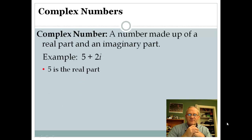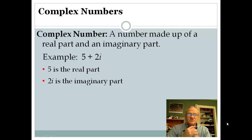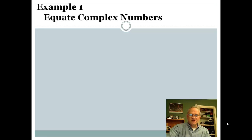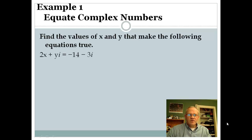In this case, the number 5 is the real part of the complex number, and 2i is the imaginary part. That's what we've talked about before — we had 2i, 5i, 8i — that's the imaginary part. So you've got the real part and the imaginary part. At first, this seems a little complicated, but just stick with me here — this isn't really all that bad. Remember that general format: you've got the real part and the imaginary part.